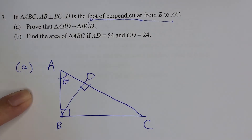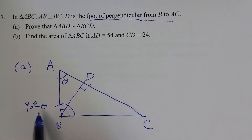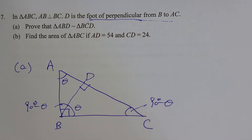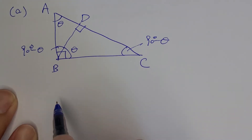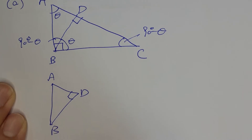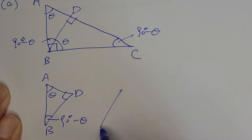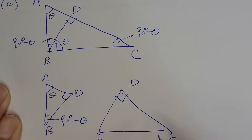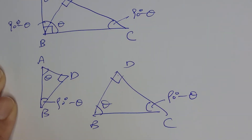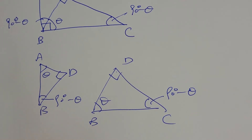Let angle BAD equal theta. Then angle ABD equals 90 degrees minus theta. Angle DBC equals 90 degrees minus (90 degrees minus theta), which equals theta again. Finally, angle BDA and angle BDC are both right angles. Splitting the figure into two triangles: triangle ABD has angles theta and (90 minus theta), and triangle BCD also has angles theta and (90 minus theta). All angles are equal.